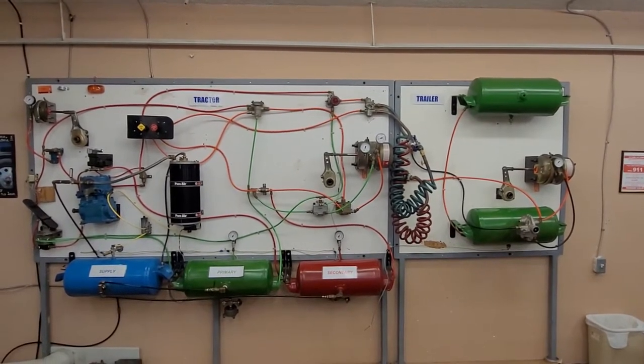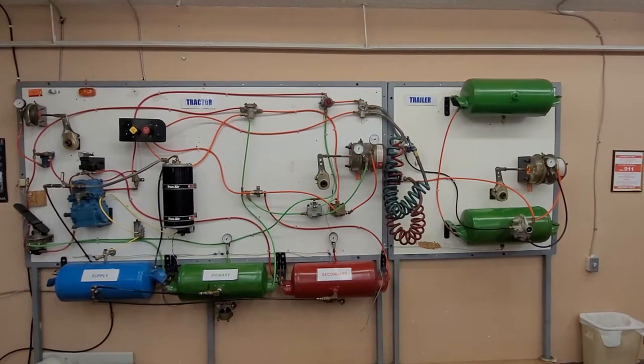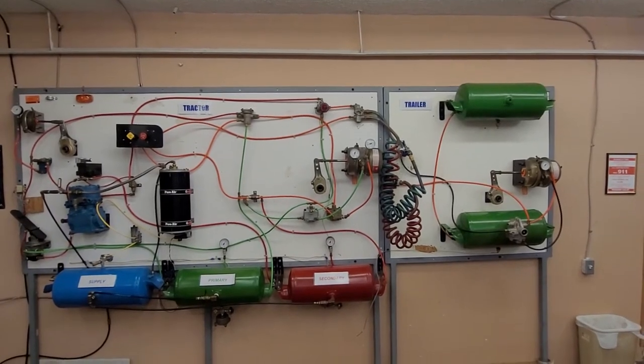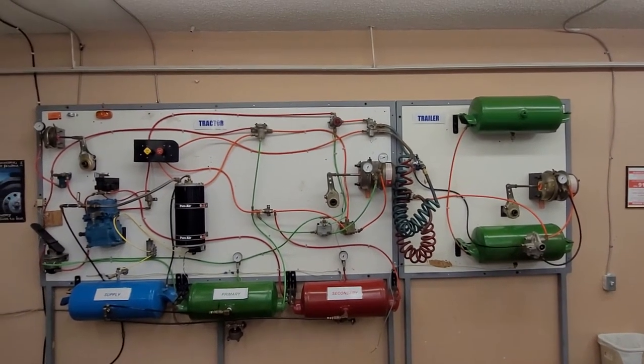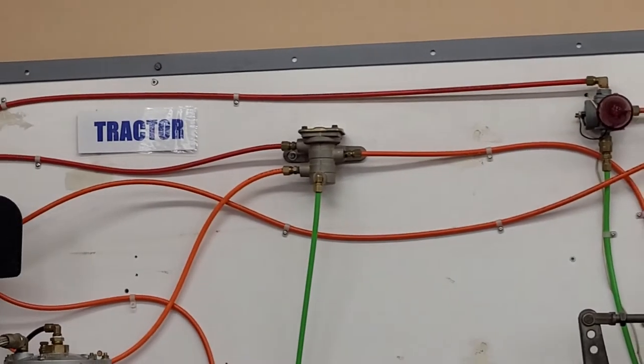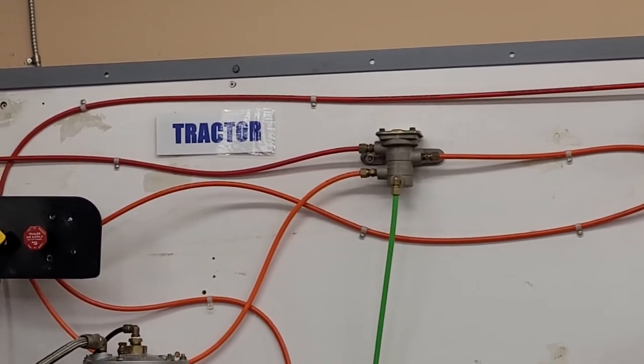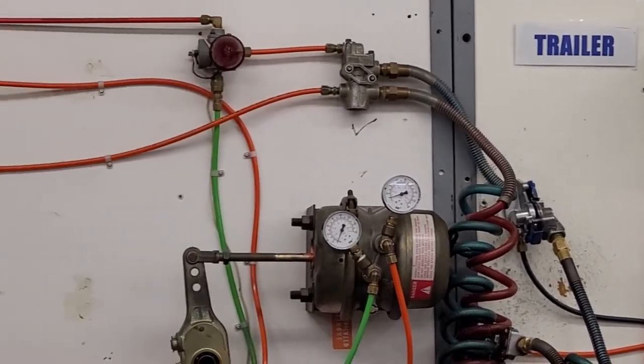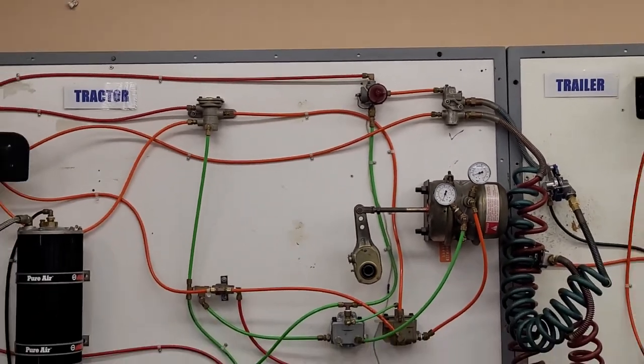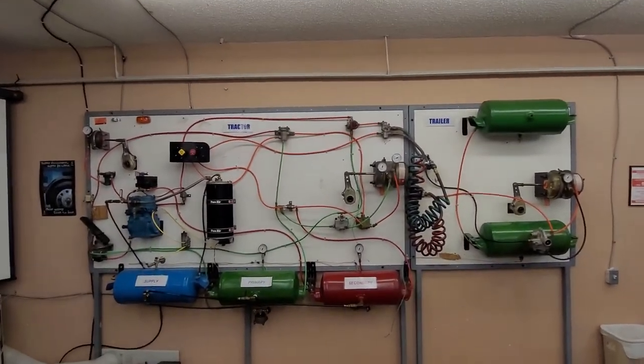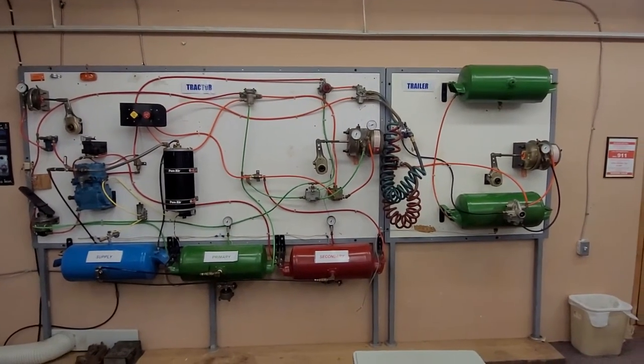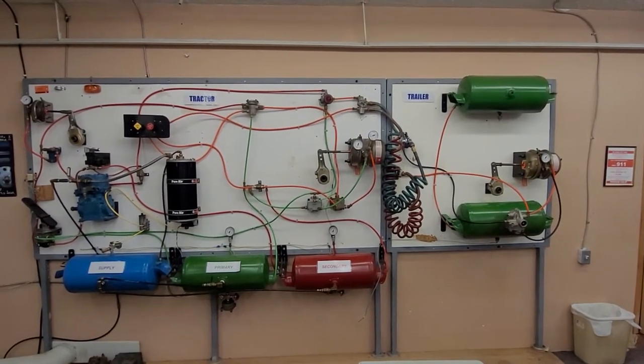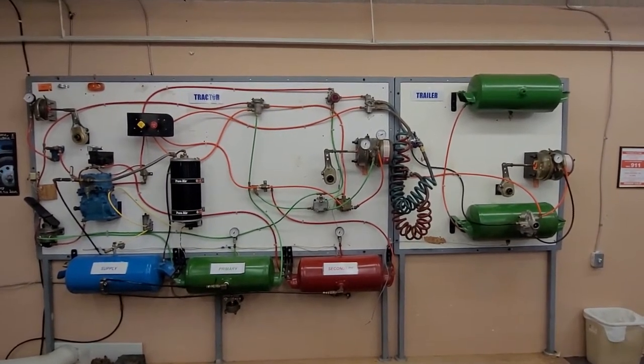Here we have our air brake board which we use to teach air brakes at the school. If we zoom in on the board, you'll see it's labeled tractor on the left and trailer on the right. The section on the left is the tractor, section on the right is the trailer.